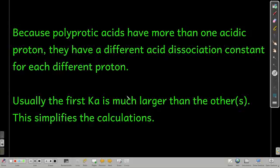And almost always, actually always, the first Ka is larger than the second, and the second is larger than the third. They get progressively smaller as you go on. So we write them like this. So for example, sulfuric acid.